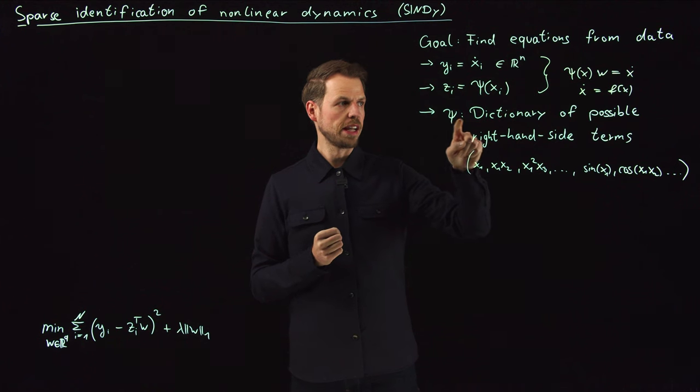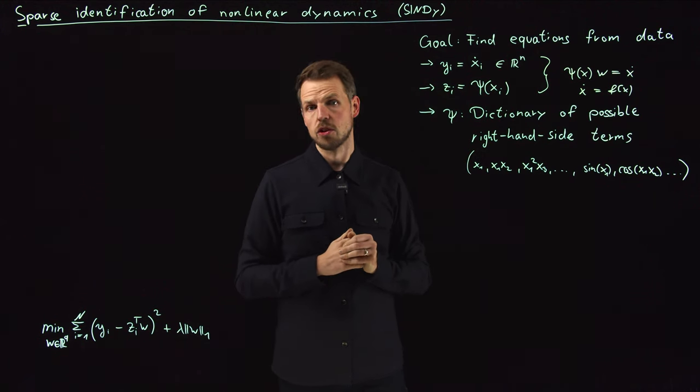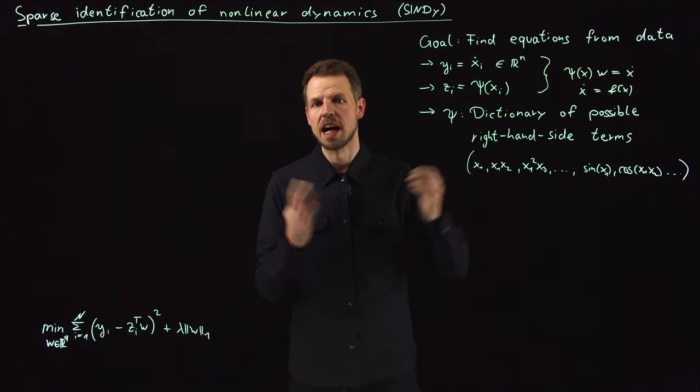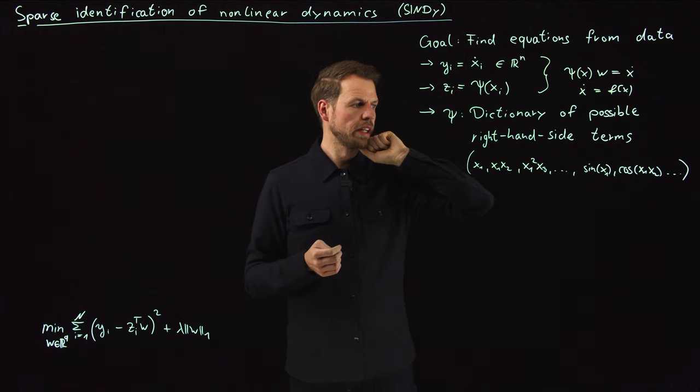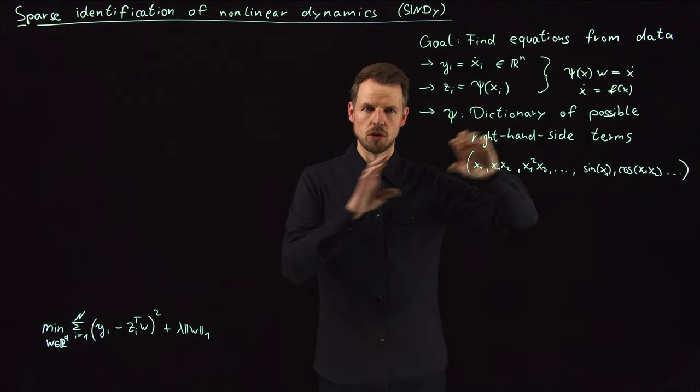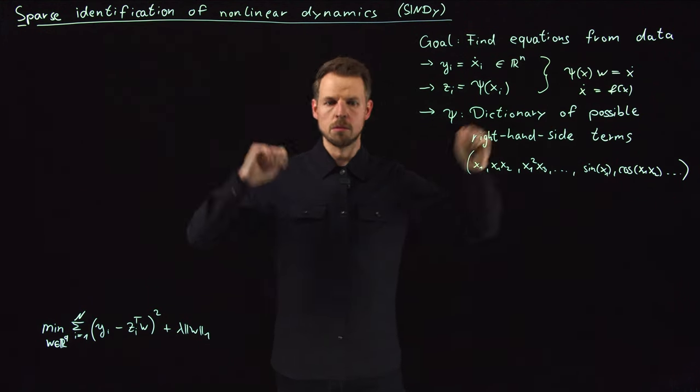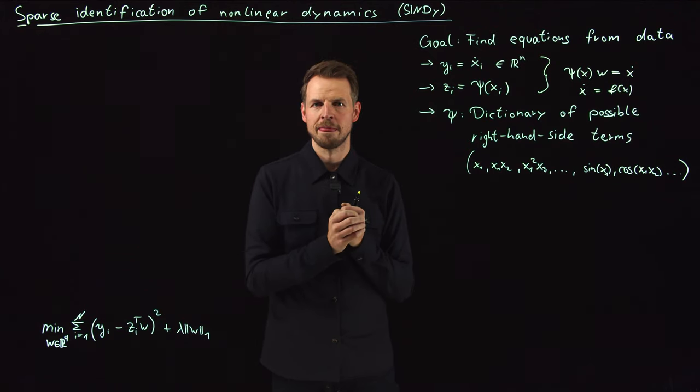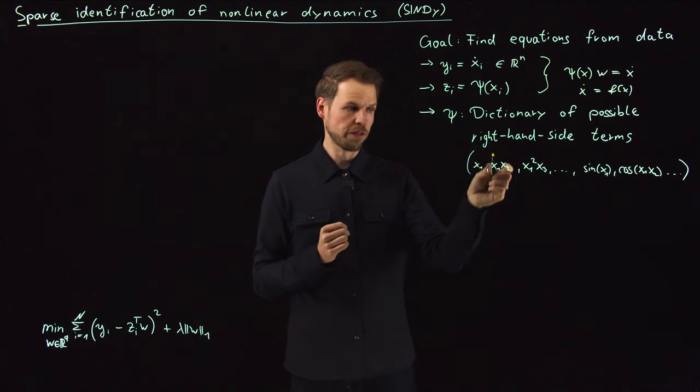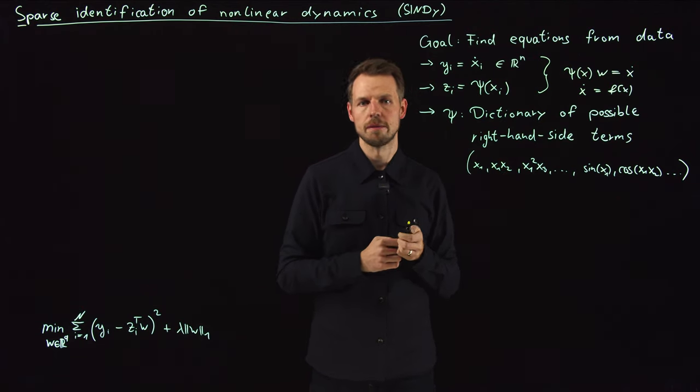The idea is, we define a Psi, a dictionary of possible right-hand side terms, and these can be arbitrary terms. You can take X1, you can take products of these, monomials of higher order, you can take sines and cosines, so this is limited by your imagination only, so it can be a very large dictionary. And here comes the key, let's use lasso to identify the meaningful terms.